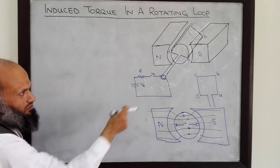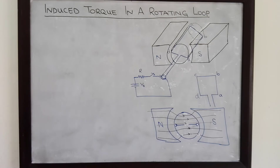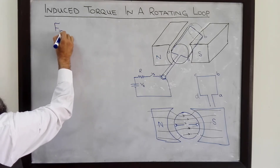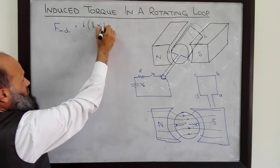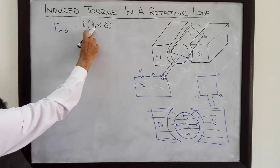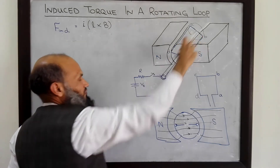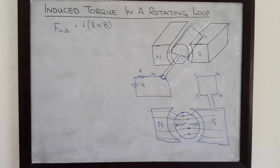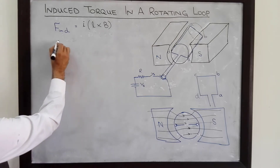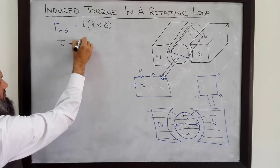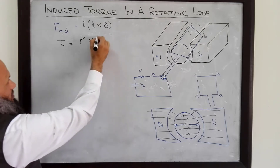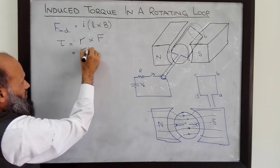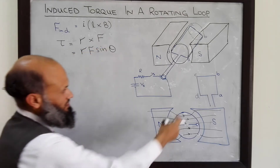We want to derive an expression for torque induced in this machine. When this switch is closed, current will start flowing through these conductors, and we know that a current carrying conductor placed in a magnetic field experiences a force. That force is given by F = I(L × B), where B is the flux density vector and L is the length vector whose magnitude is the effective length of the conductor and whose direction is the same as the direction of current. Torque is related to force by τ = R × F = RF sinθ.